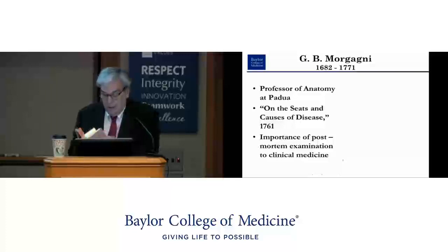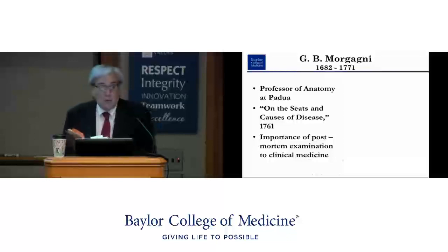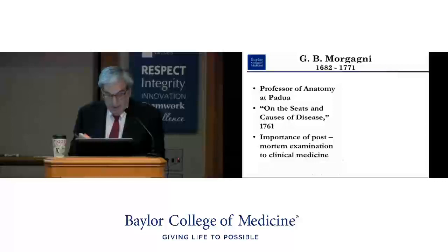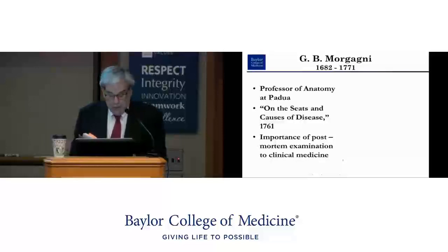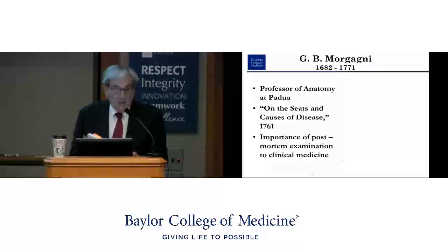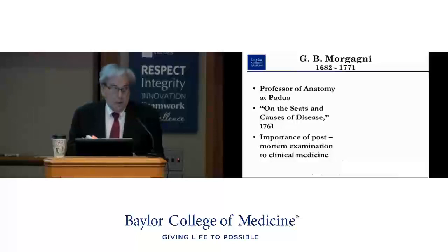Osler is enamored of Morgagni, so I'll read from his book. 'From no section does one get a better idea of the character and scope of the work of this man than from that relating to the heart and arteries. Affections of the pericardium, diseases of the valves, ulceration, rupture, dilation, and hypertrophy, and affections of the aorta are all very fully described. The section on aneurysm of the aorta remains one of the best ever written. It is not the anatomical observation alone that makes the work of unusual value, but the combination of clinical with anatomical records. What could be more correct than the account of angina pectoris—probably the first in literature.'